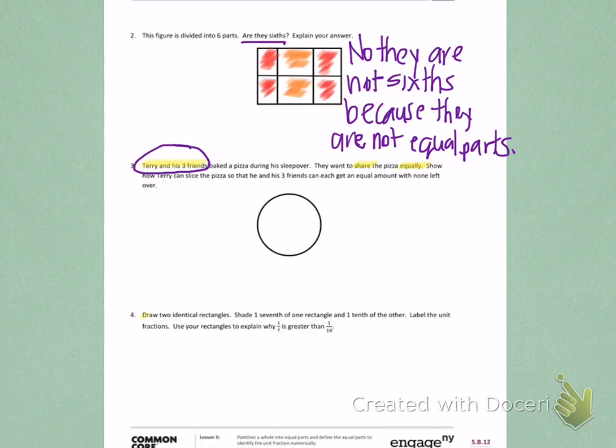So to start, I need to draw two identical rectangles. I'm going to draw long, skinny rectangles so I give myself room on the other side to write my explanation.